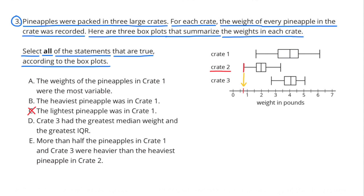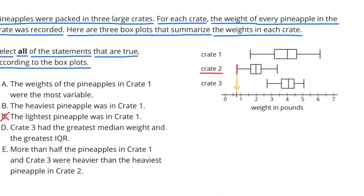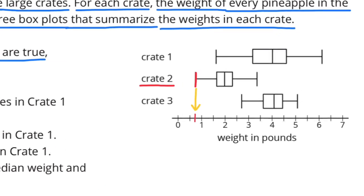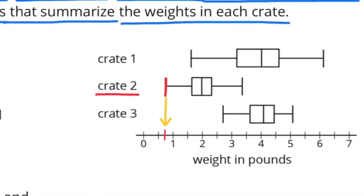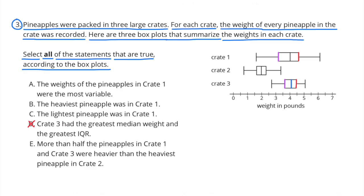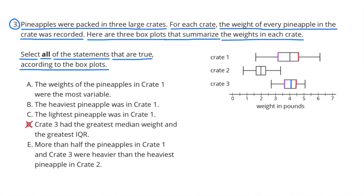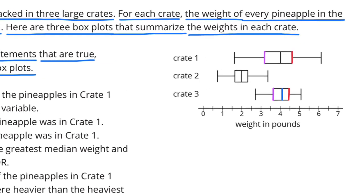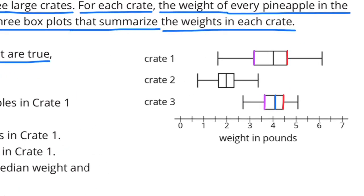Statement C: The lightest pineapple was in crate 1. No, that's not true. The lightest pineapple was in crate 2, and it weighed between a half a pound and one pound, probably about three quarters of a pound. Statement D: Crate 3 had the greatest median weight and the greatest IQR. It may have had the greatest median, but it doesn't have the greatest IQR — crate 1 has a larger IQR, which is quartile 3 minus quartile 1.